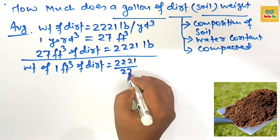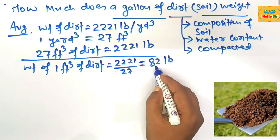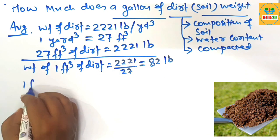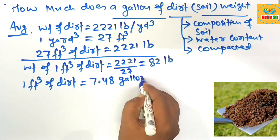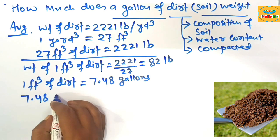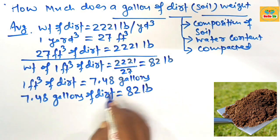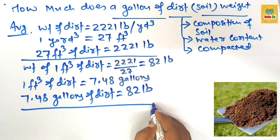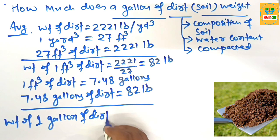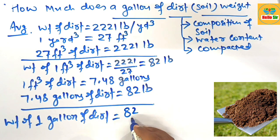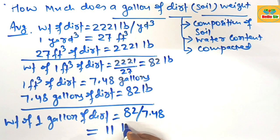2,221 divided by 27 equals 82 pounds. It means one cubic foot of dirt material equals 82 pounds. Now we calculate the weight of one gallon of dirt.